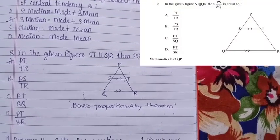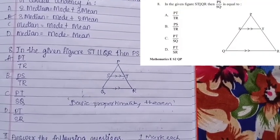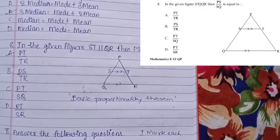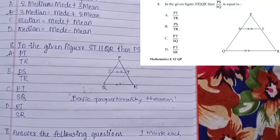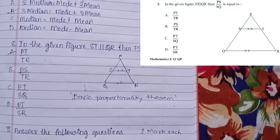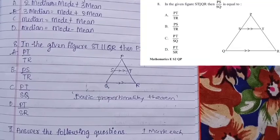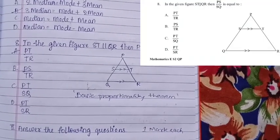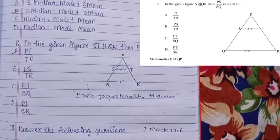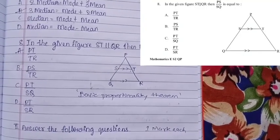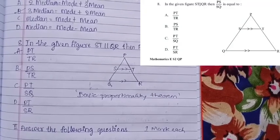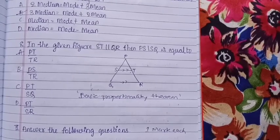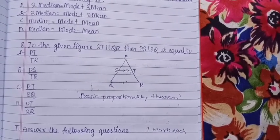In the given figure, ST is parallel to QR; then PS/SQ equals — see the figure. According to the basic proportionality theorem, when PS/SQ is given, the answer comes PT/TR.